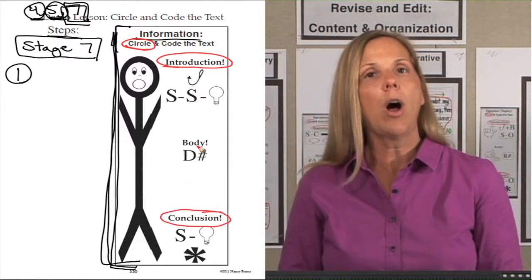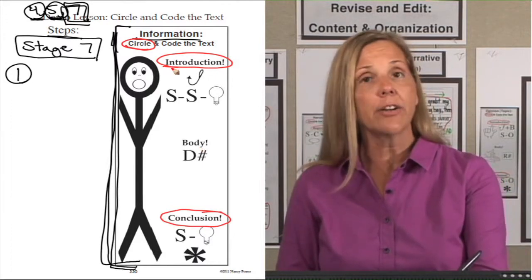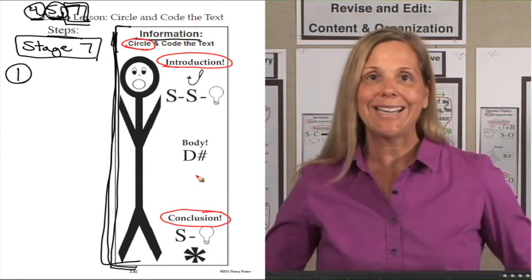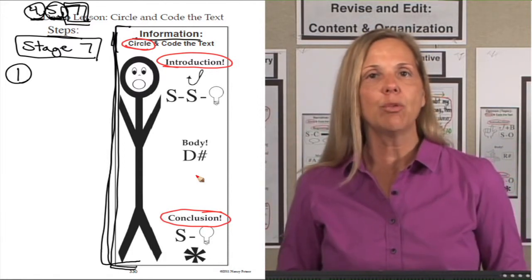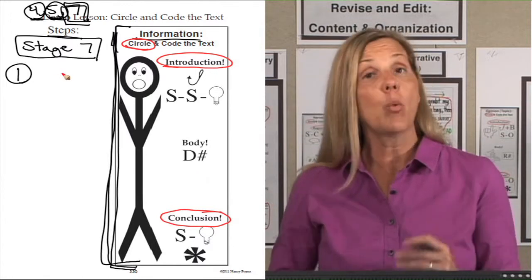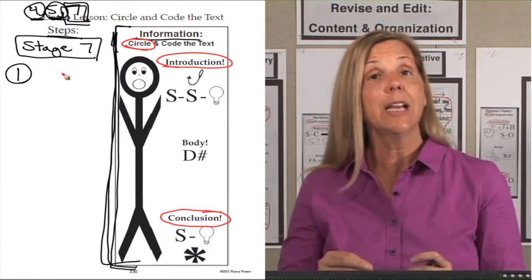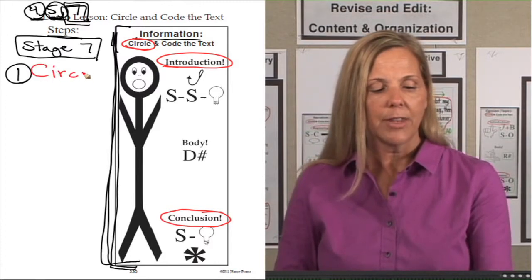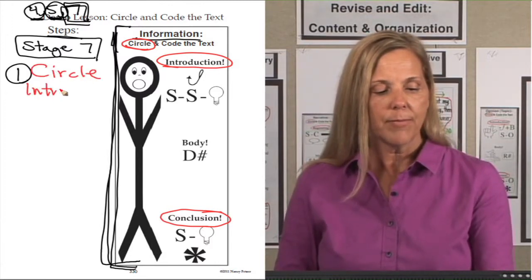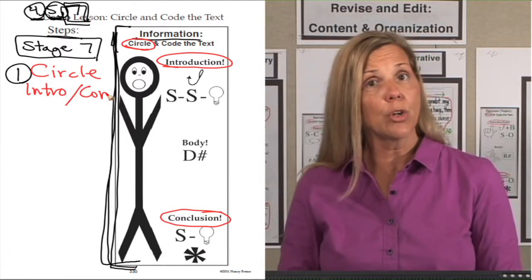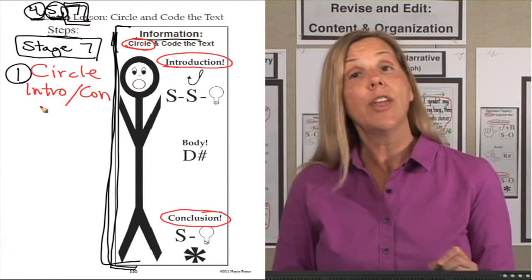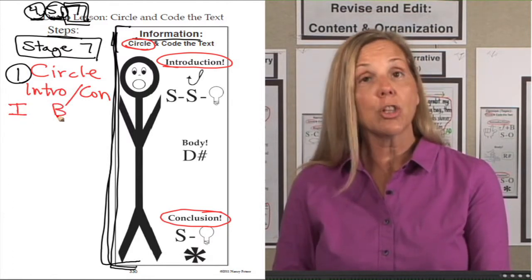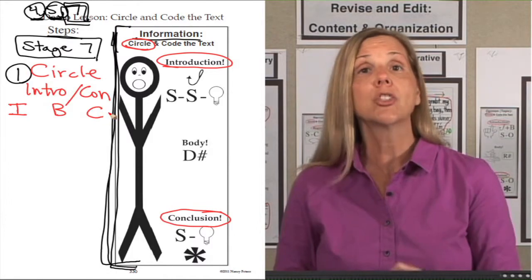Not the body. Why? Because if I circle the introduction and the conclusion, then everything that's in the middle is the body. This is an easy way for students to visually identify on their paper where their introduction, body, and conclusion are. So the first step is to circle your introduction and the conclusion. After you circle the introduction and conclusion, you will write an I next to the introduction, a B next to the body, and a C next to the conclusion.